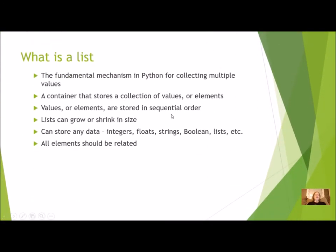What is a list? It is the fundamental mechanism in Python for collecting multiple values and giving them one name so they're easy to access. It is a container that stores a collection of values — which in programming we call elements — stored in sequential order. The first one put in will be first, the second will be second, and so on. The list can grow or shrink in size, and the data stored can be of any data type: integers, floats, strings, booleans, or even a list of lists.